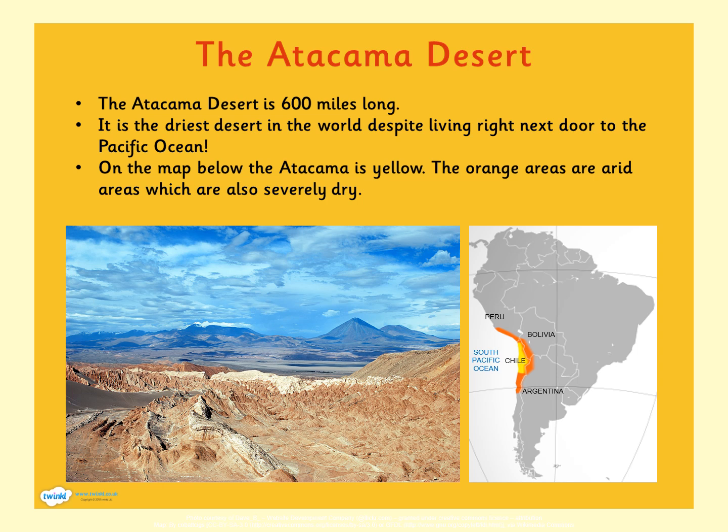The Atacama Desert is 600 miles long. It is the driest desert in the world, despite living right next door to the Pacific Ocean. On the map, the Atacama is shown in yellow, and the orange areas are arid areas which are also severely dry. The Atacama Desert is located in Chile.